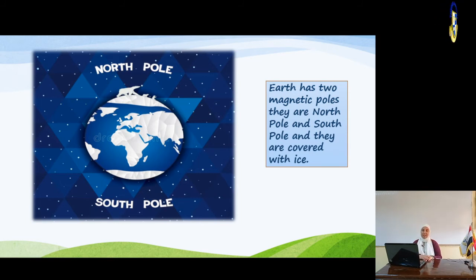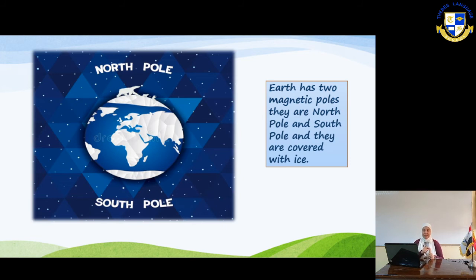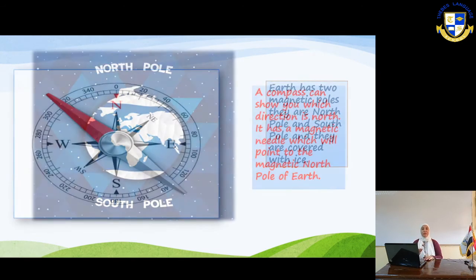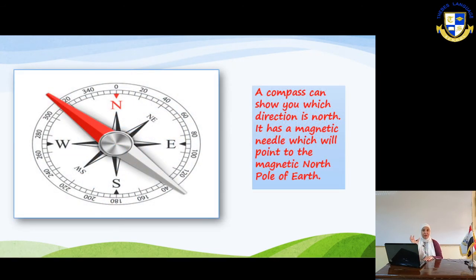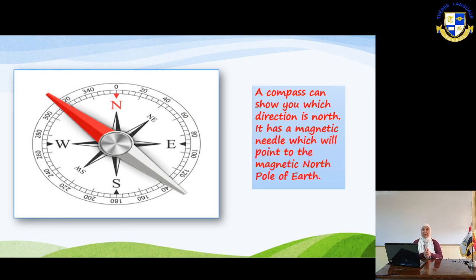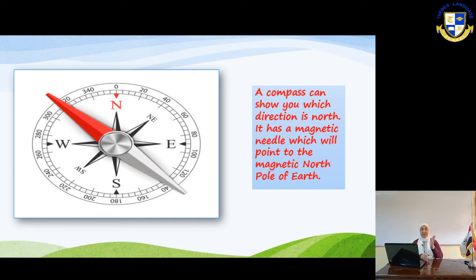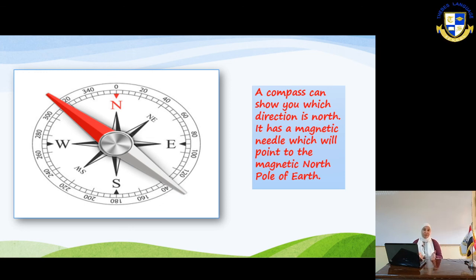So in this lesson, we learned about the north and south poles of the Earth — they are magnetic poles — and we use a compass to show us the north pole. If you are going to any place and you don't know where to go, you should have a compass or a map. The compass has a magnetic needle which points to the north direction always, and the map also has an arrow showing the north direction. Once you know the north direction, you will know the rest of the directions. That's all for now — thank you, and see you again in the next lesson, bye!